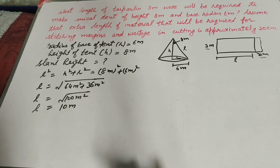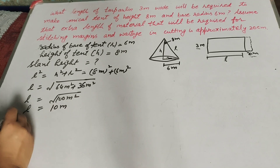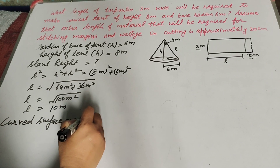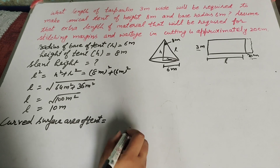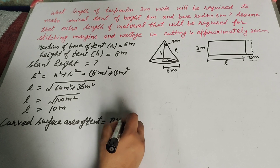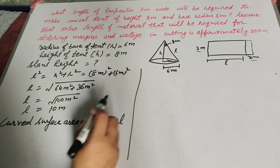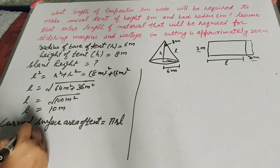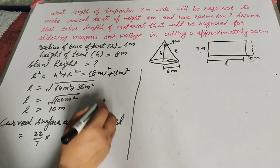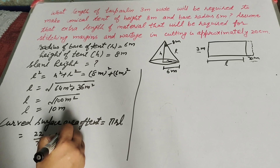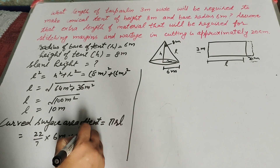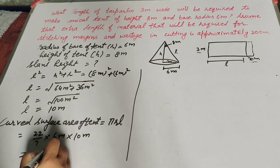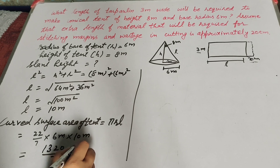Now we find the curved surface area of the tent. The curved surface area is equal to pi r l. We find the curved surface area because the tarpaulin is used to make the tent. It is equal to pi — whose value is 22 over 7 — multiplied by radius 6 meter, multiplied by slant height l which is 10 meter. So 22 multiplied by 6 multiplied by 10, we get 1320 over 7 meter squared. This is the curved surface area of the tent.